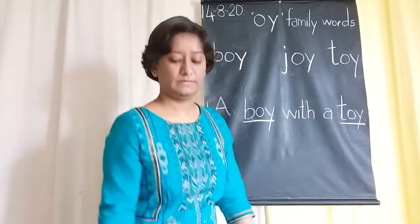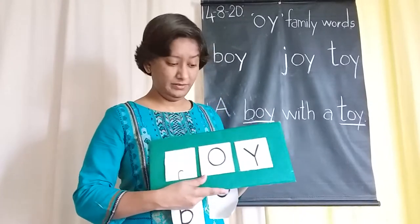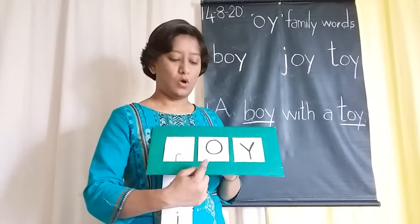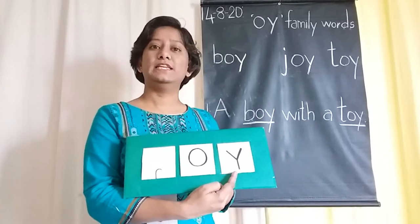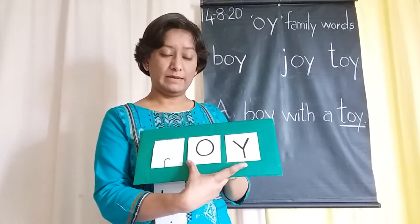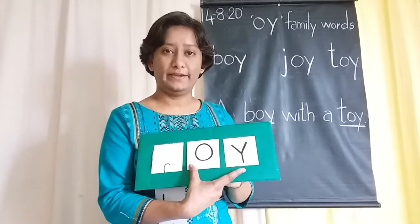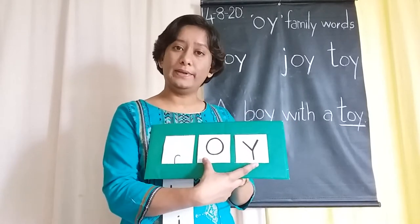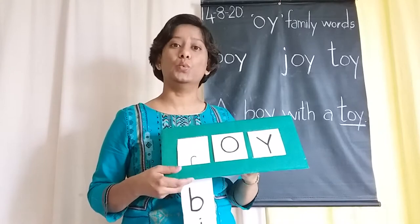Let's say together: O says AW, Y says Y. When they come together they say OI. Now using OI blends we are going to make new words.